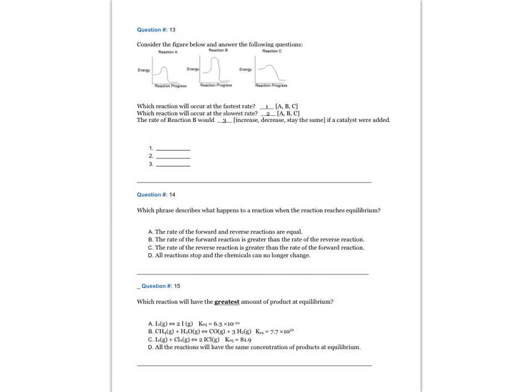Question 11 continued. Which reaction will occur at the fastest rate? Which reaction will occur at the slowest rate? The rate of reaction B would increase, decrease, or stay the same if a catalyst were added? The reaction that would occur the fastest is C — it has the lowest activation energy. The slowest rate is B — it has the highest activation energy. The rate of reaction B would increase if a catalyst were added.